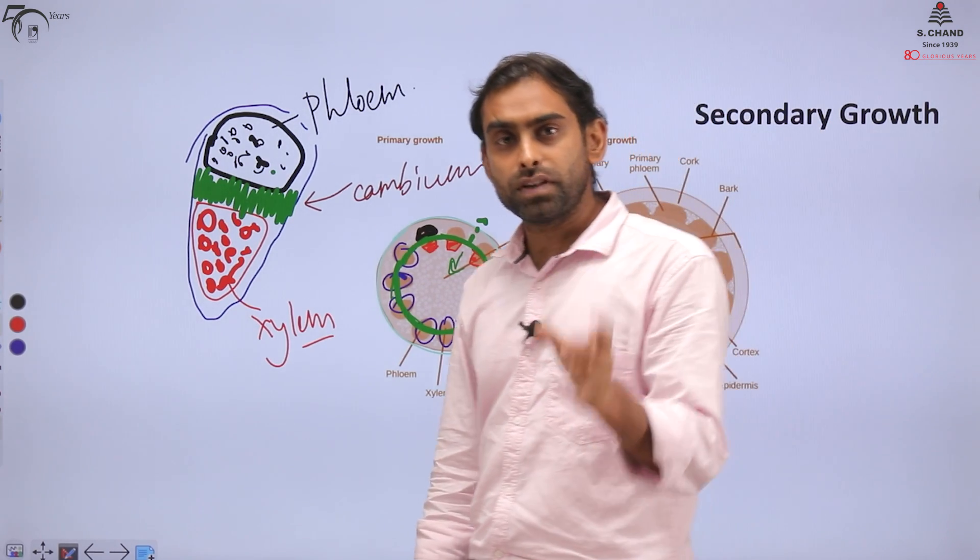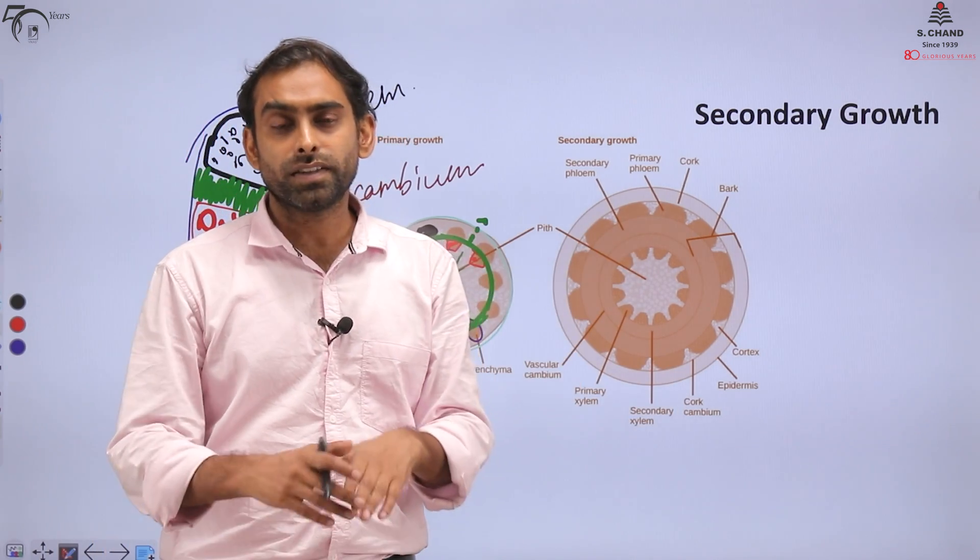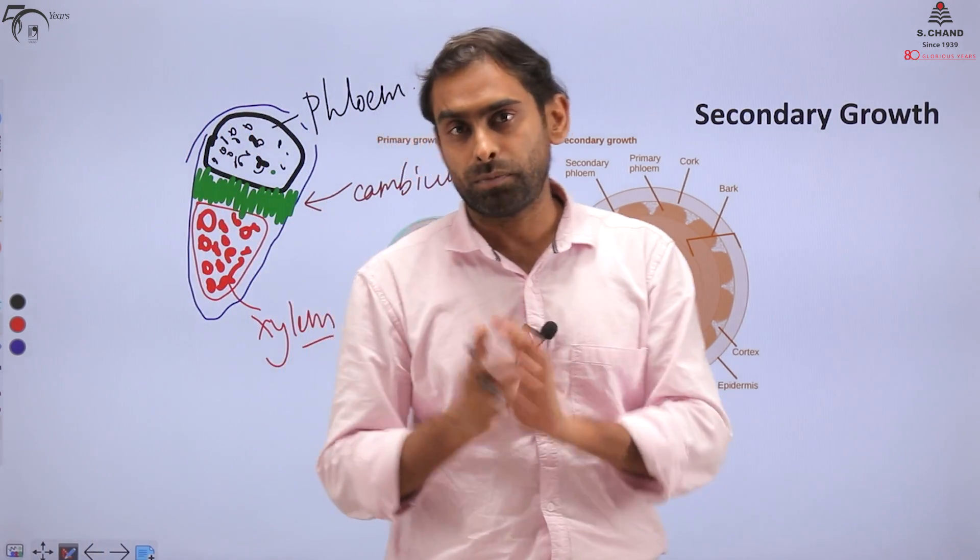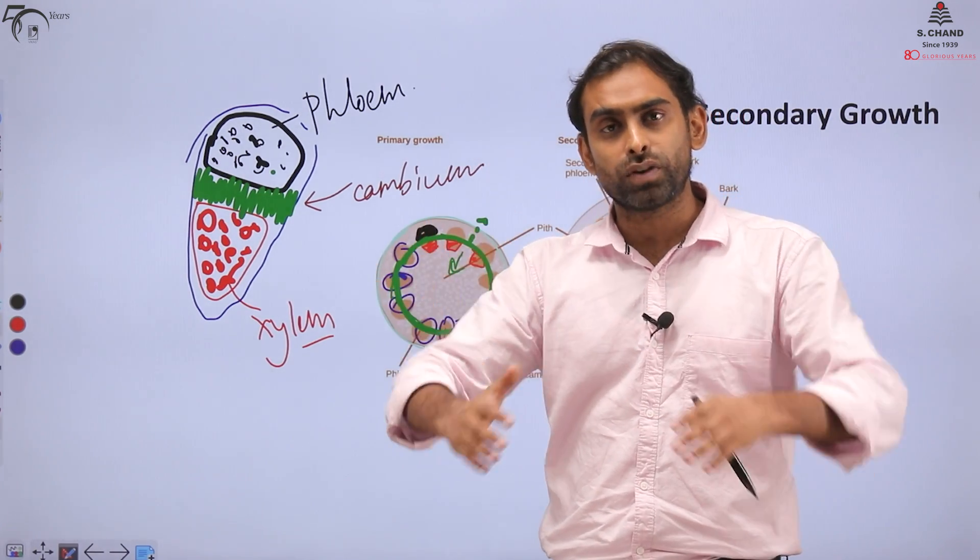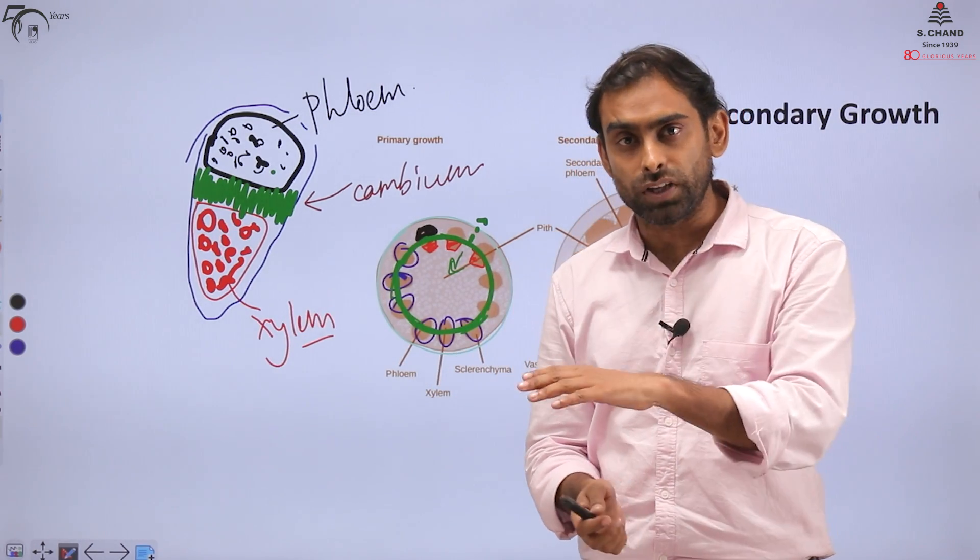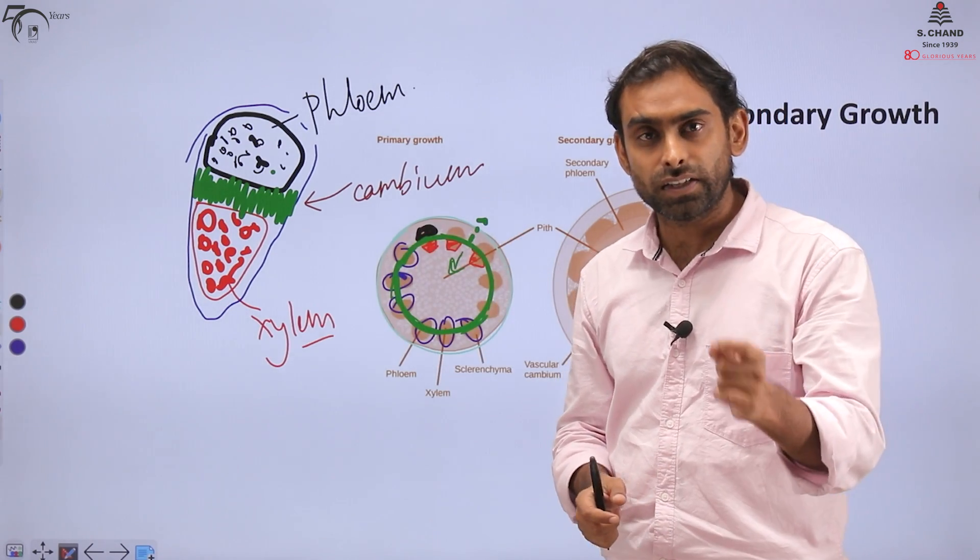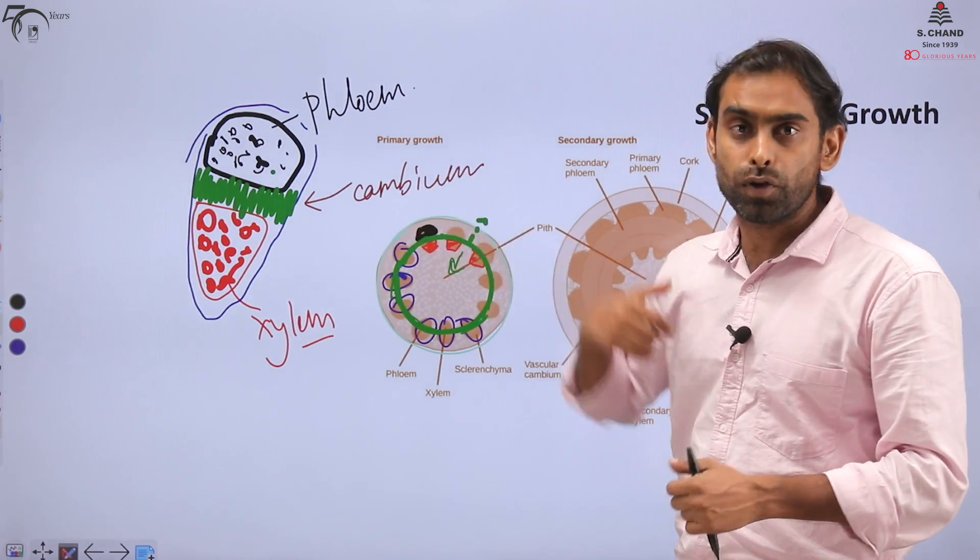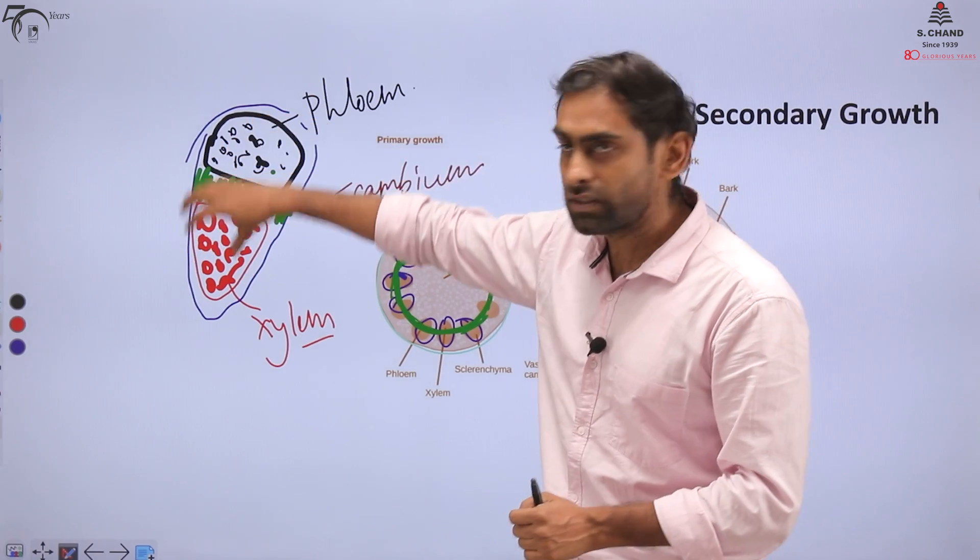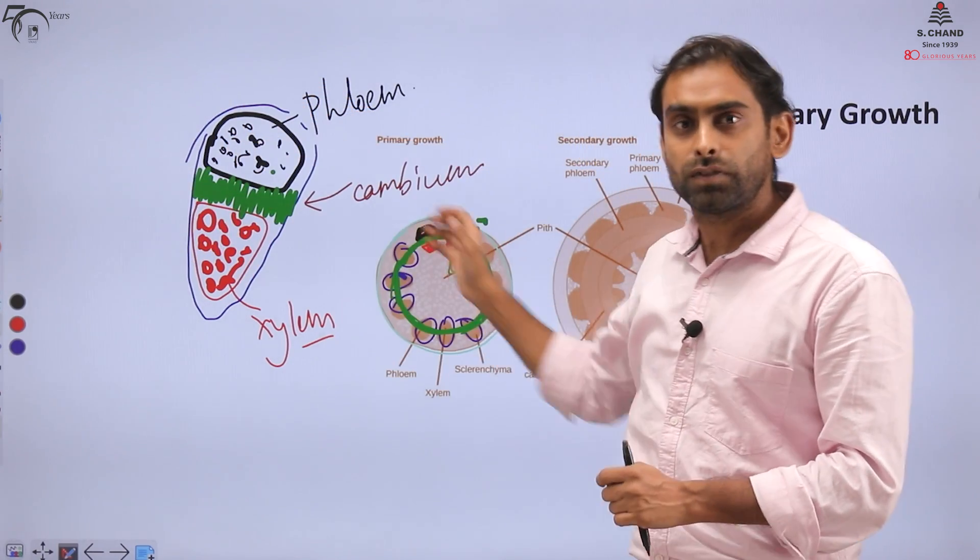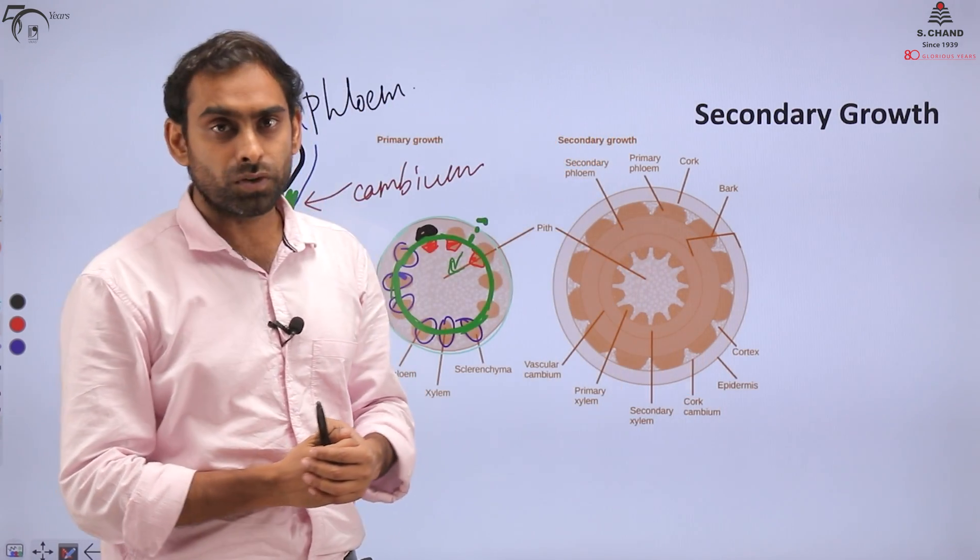Now we should remember that cambium is a meristem. It has ability to both self-renew as well as to transform or differentiate into other types of cells. So cambium doesn't remain cambium. After dividing, the new cells differentiate. And they give rise to the adjacent type of cells which were present there, that is xylem and phloem. New xylem cells and new phloem cells form.